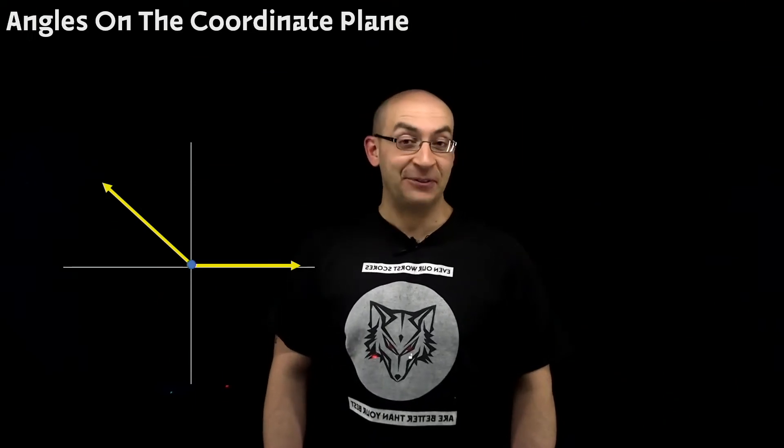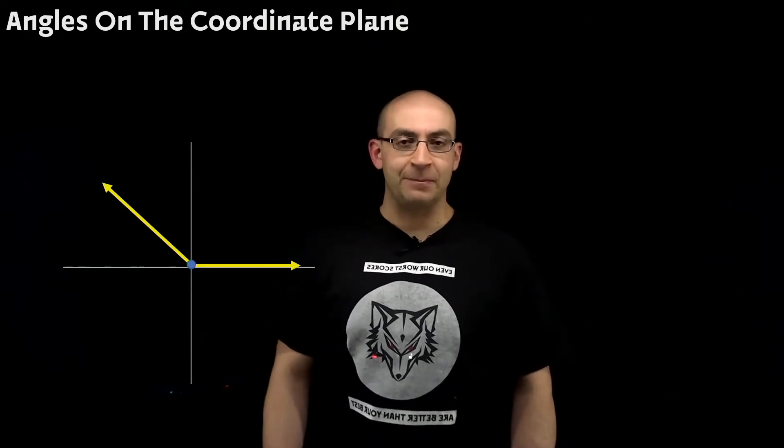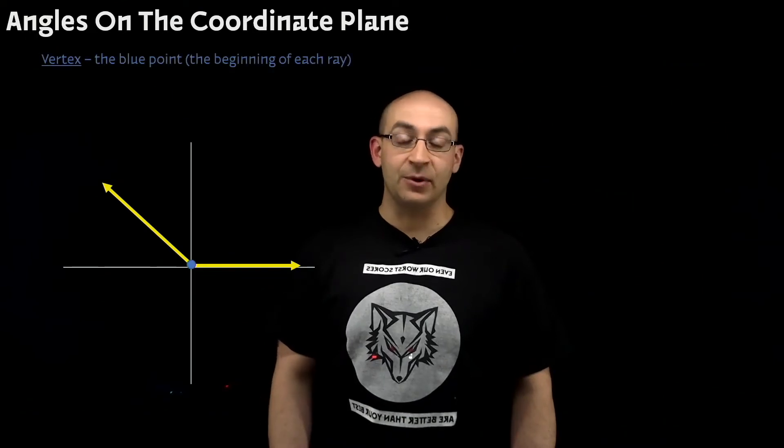So we have an angle here. It's definitely obtuse. But you can see it's on the backdrop of the coordinate plane. That's going to be really important for us to be able to identify these types of things.